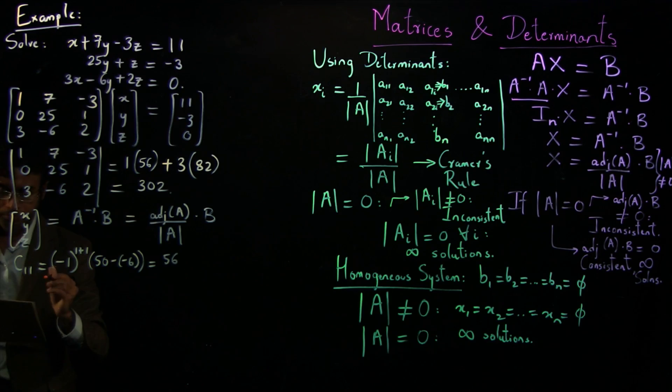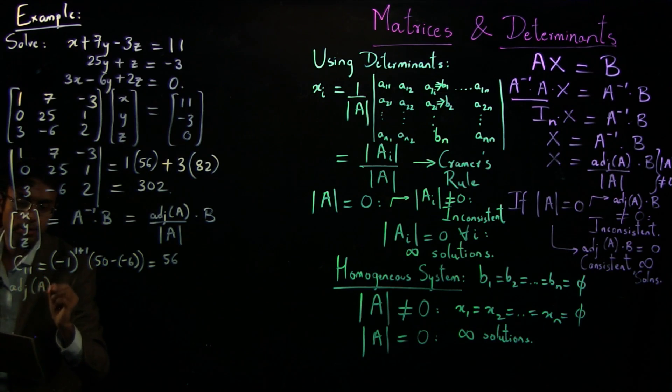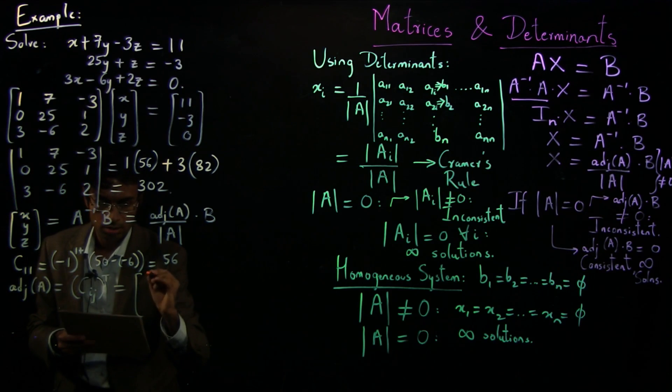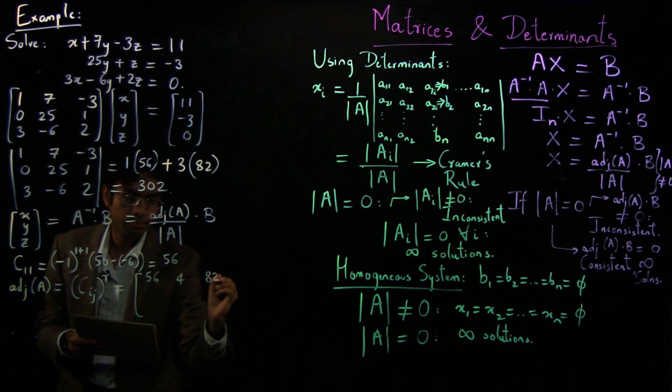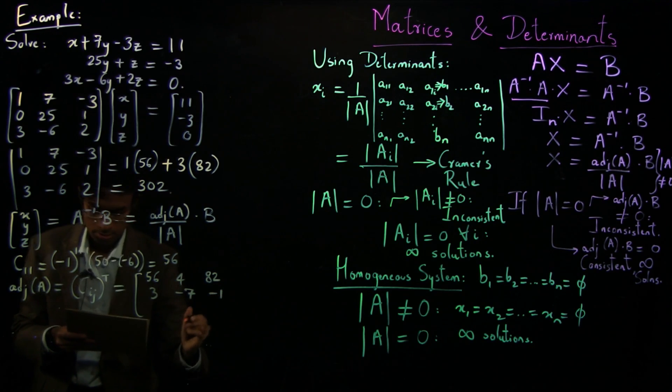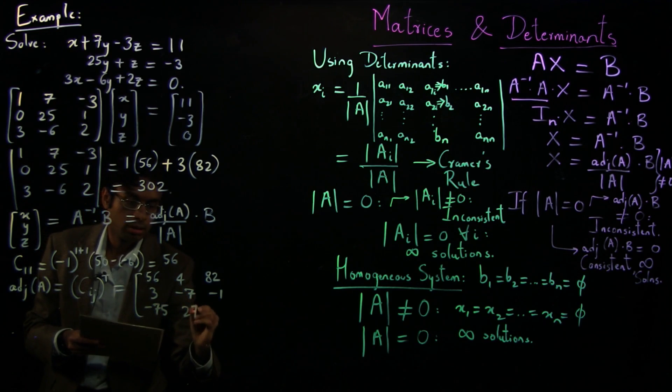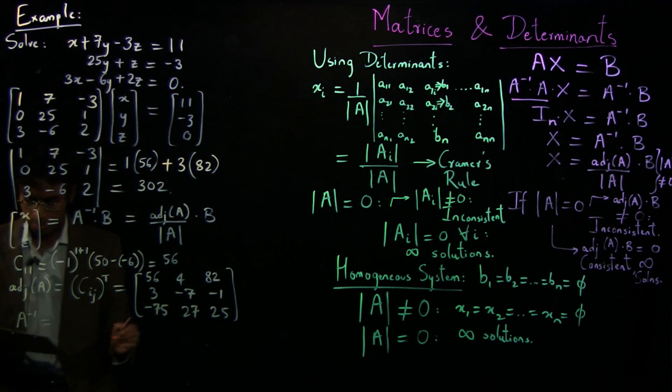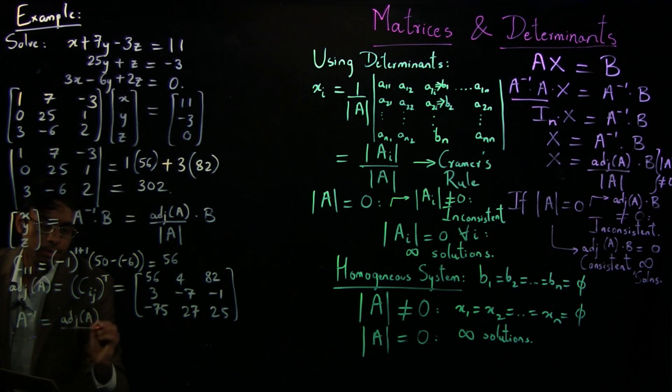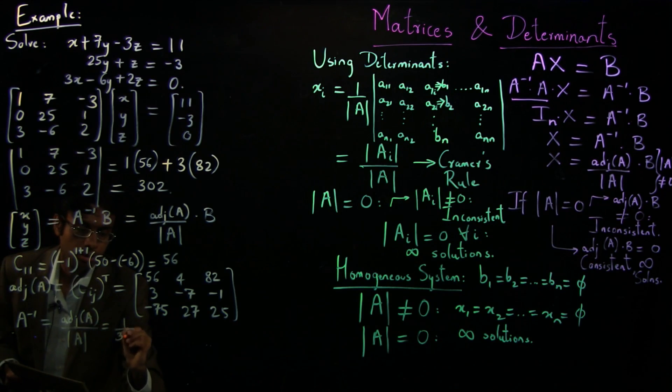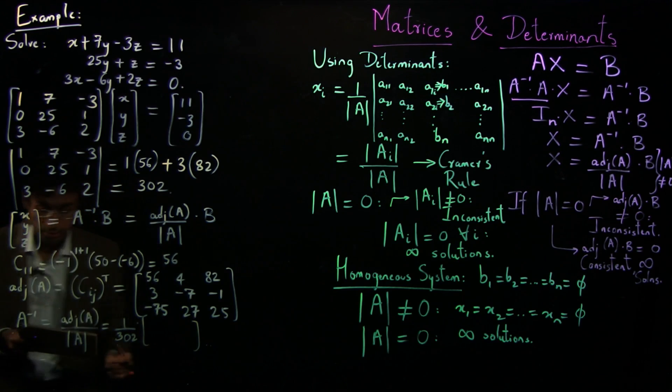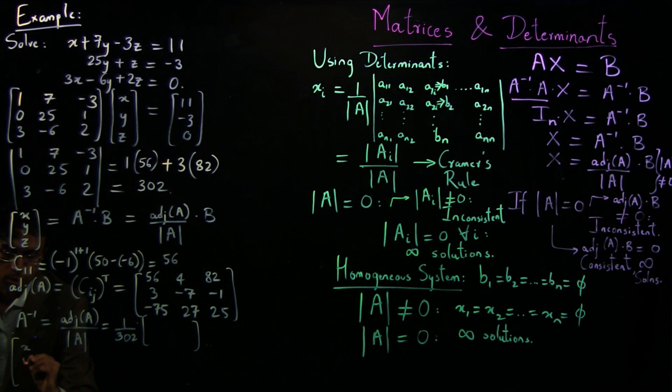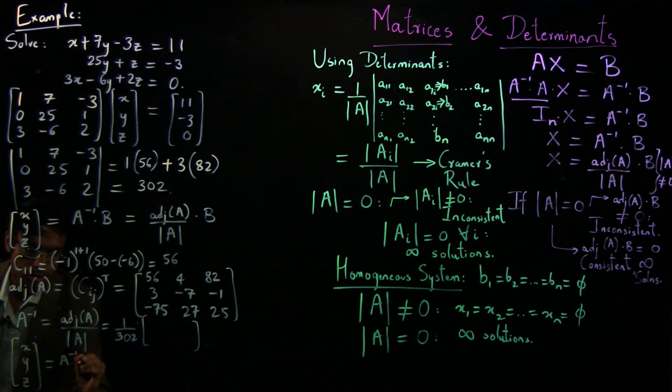And what you can show is adjoint of A is basically the transpose of all the cofactors of the elements of A. It works out to be this: 56, 4, 82, 3, minus 7, minus 1, minus 75, 27, and 25. So A inverse is simply adjoint of A divided by the determinant of A. So 1 over 302 times this whole big matrix. I'm not going to write it again. And then once you have A inverse, you get your unknown variables x, y, z is A inverse times B.